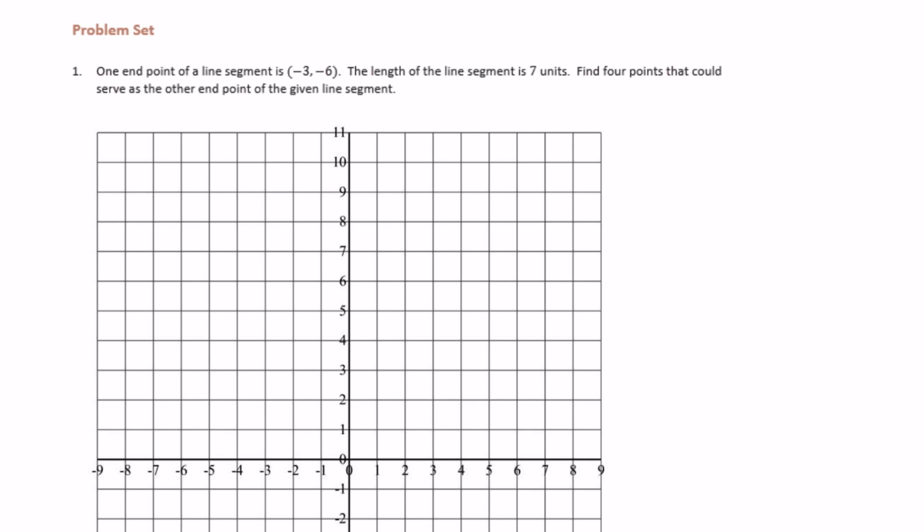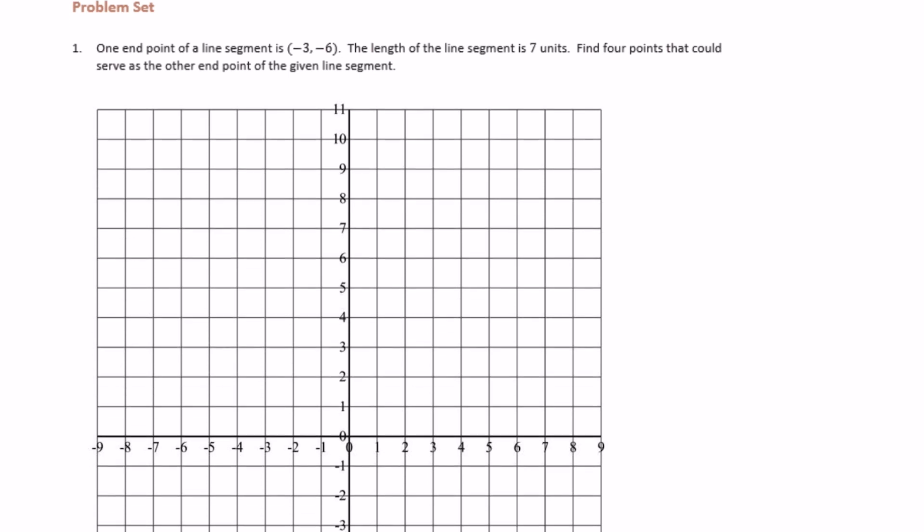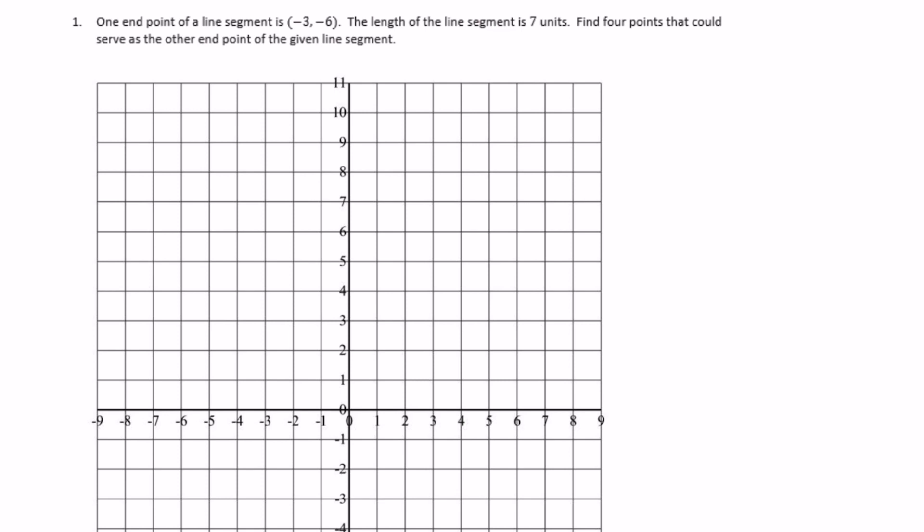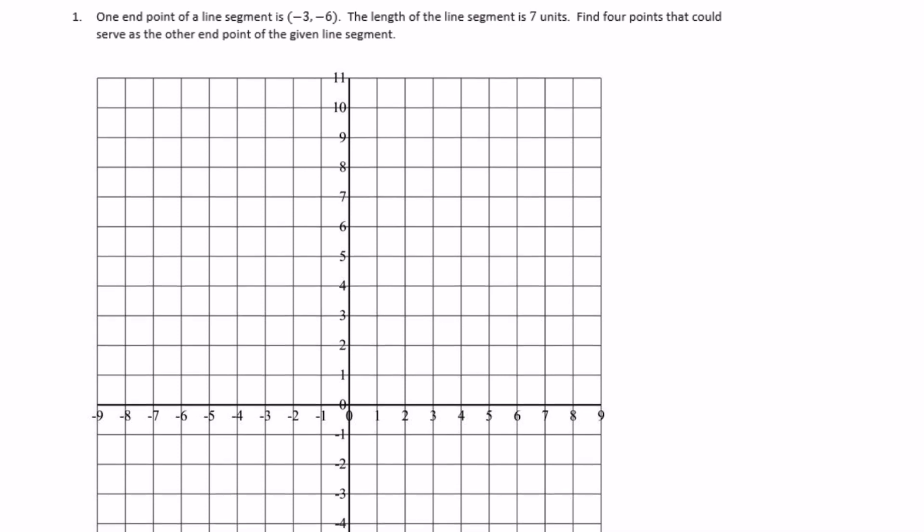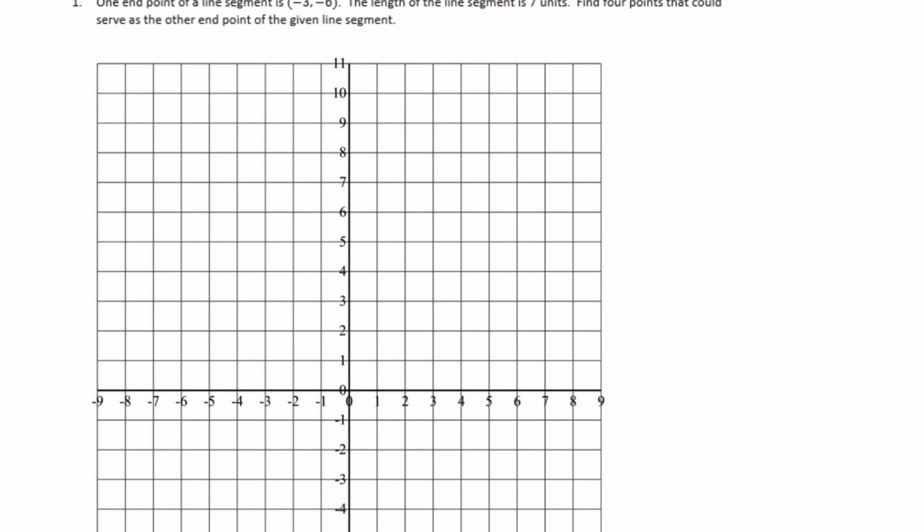Sixth grade module 3 lesson 19 problem set number one. One endpoint of a line segment is negative 3, negative 6, right there, and that's one endpoint of a line segment.